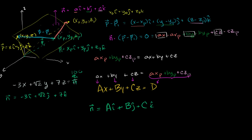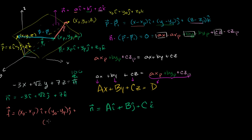How could we specify this vector? Let me call that vector f. Vector f is just going to be this yellow position vector minus the green position vector. Each component is the difference of the corresponding coordinates: so it's going to be (x0 minus x sub p) i, plus (y0 minus yp) j, plus (z0 minus zp) k. That's just some vector that comes off the plane and onto this point.